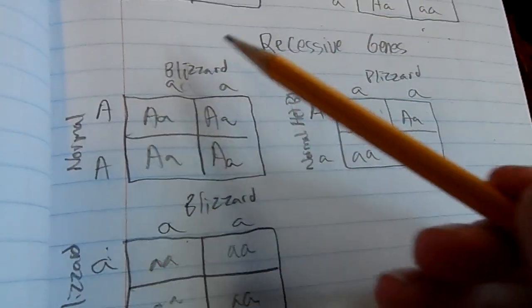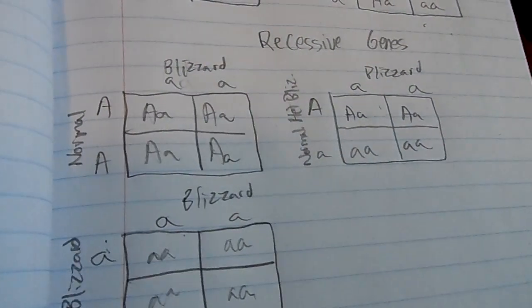Including blizzards, patternless, albinos, stuff like that.